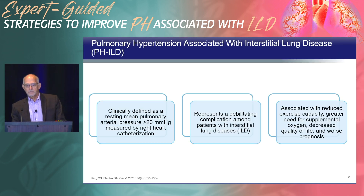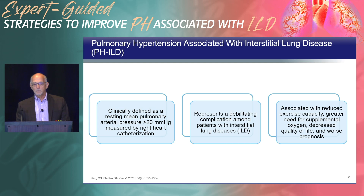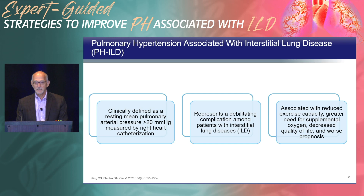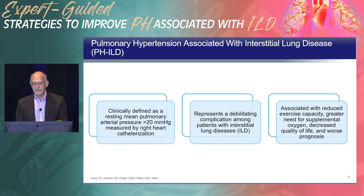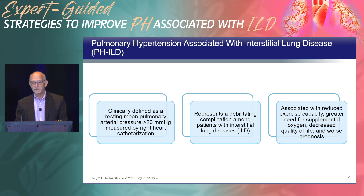This is the current definition of pulmonary hypertension. As most people know, we've lowered the threshold and now PH is defined by a mean pulmonary artery pressure of greater than 20 millimeters of mercury. Whenever you diagnose PH, it always has to be on right heart cath. And it's especially debilitating in the context of interstitial lung disease.